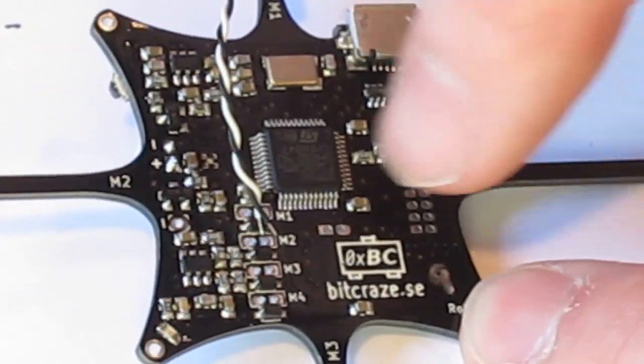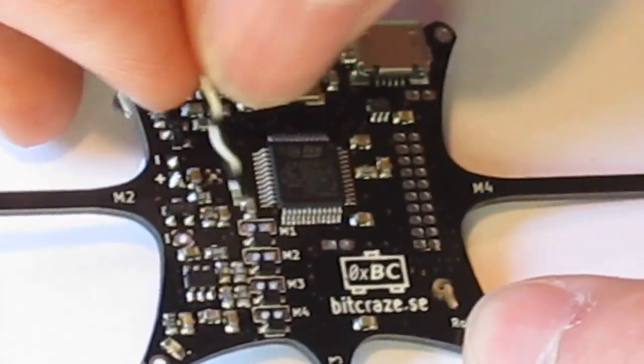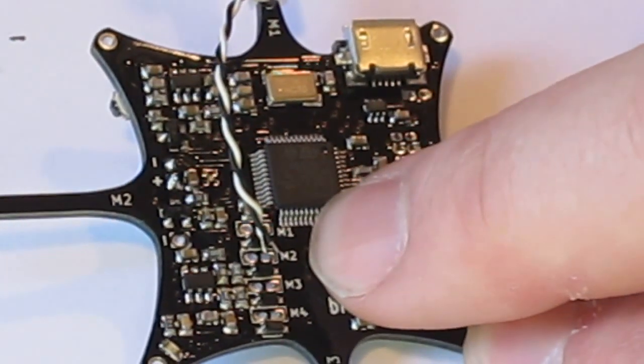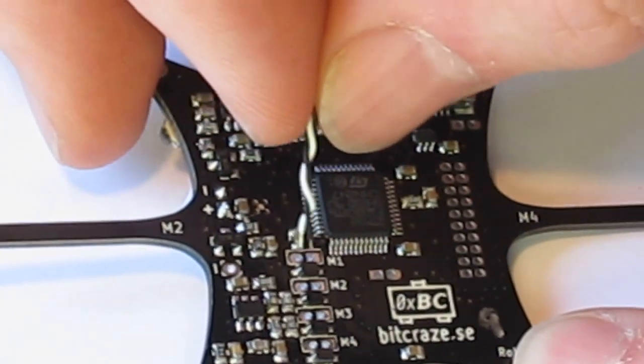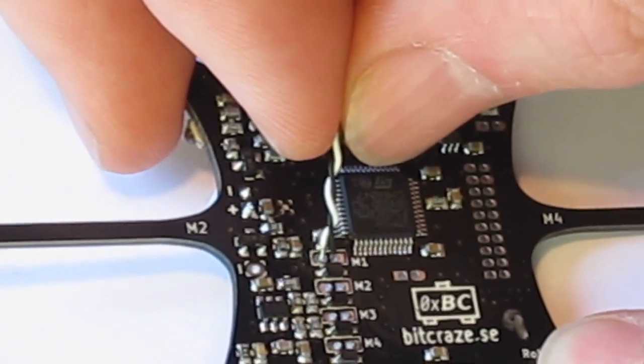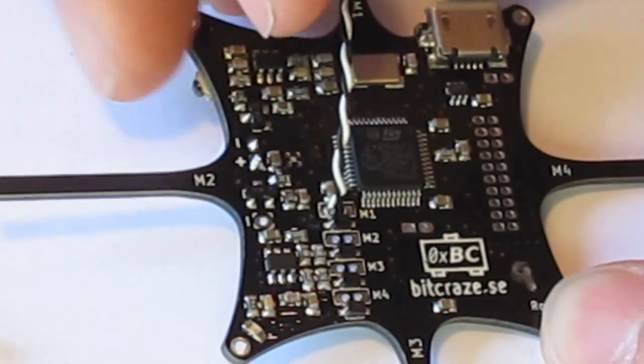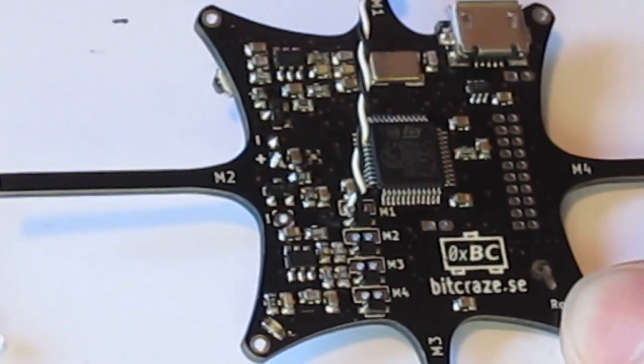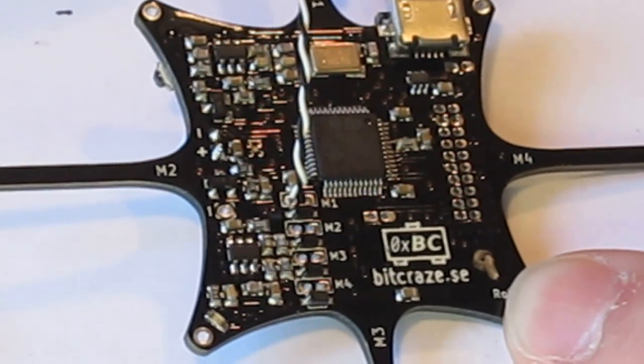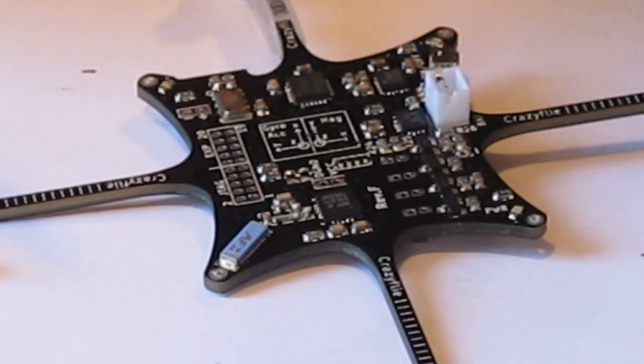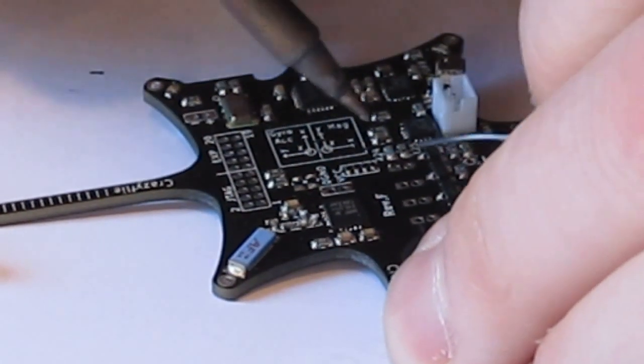Okay and then we insert the wires into the corresponding through holes here. So motor 1 and motor 1. And we start with the white wire for the circular pad and black for the square one. So just push them in a bit. And then you can see that they stick like that. And then you can turn it around and solder it. Okay so then we solder the wires from the top.